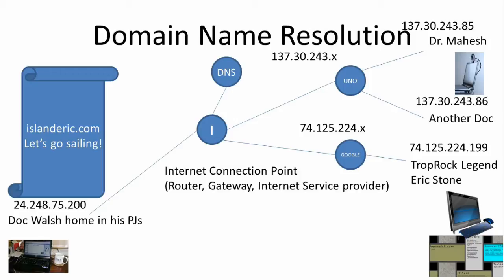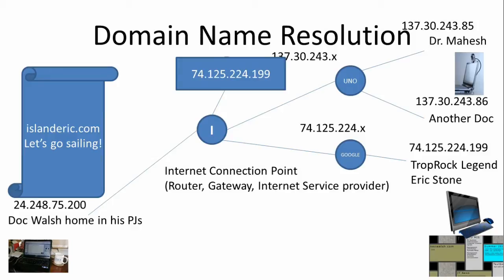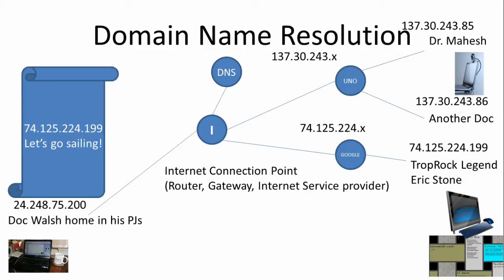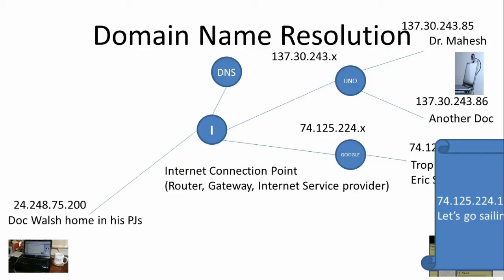Those names are good for people but bad for computers, so we use domain name resolution to convert a human-readable name into the IP address used by computers. For example, if I want to send a message to islanderic.com, my computer asks the domain name server to convert that name to an IP address. The domain name server returns the IP address, the message is updated with it, and then it can be routed just like in our previous example.